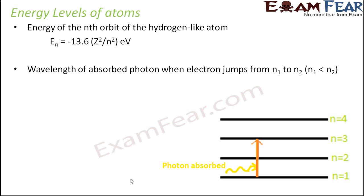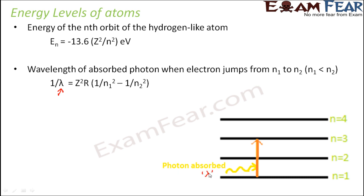When an electron jumps from a lower energy level to a higher energy level — as shown in the picture, from n equal to 1 to n equal to 3 — a photon is absorbed, meaning some external energy is provided. The photon being absorbed has a wavelength λ such that 1/λ equals Z²R times (1/n1² minus 1/n2²), where n1 represents the lower energy level and n2 represents the higher energy level.